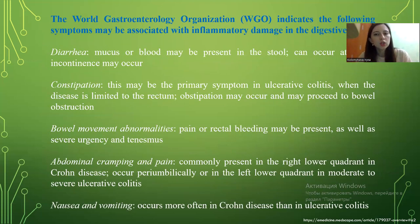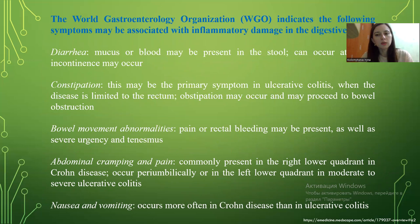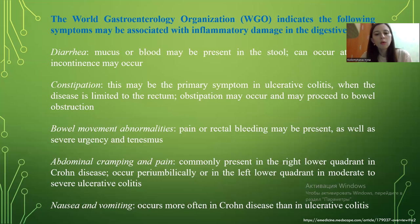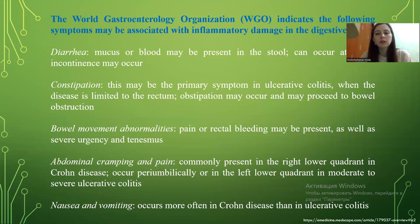The gastrointestinal symptoms associated with inflammatory damage in the digestive tract include: diarrhea, where mucus or blood may be present in the stool and can occur at night; constipation, which may be the primary symptom in ulcerative colitis when limited to the rectum; obstipation, which may progress to bowel obstruction; abdominal cramping and pain commonly present in the right lower quadrant in Crohn's disease or the left lower quadrant in moderate to severe ulcerative colitis; and nausea and vomiting, which occur more often in Crohn's disease than in ulcerative colitis.